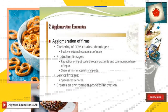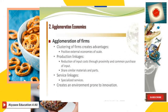What are diseconomies of scale? This is the size level after which cost per unit increases, often linked with growing complexities and difficulties in managing the firm — the ideal firm size is when diseconomies of scale start to emerge. Agglomeration economies refer to the clustering of firms creating advantages through positive external economies of scale and production linkages. These can reduce input cost through proximity and common purchase of inputs, sharing similar materials and parts.